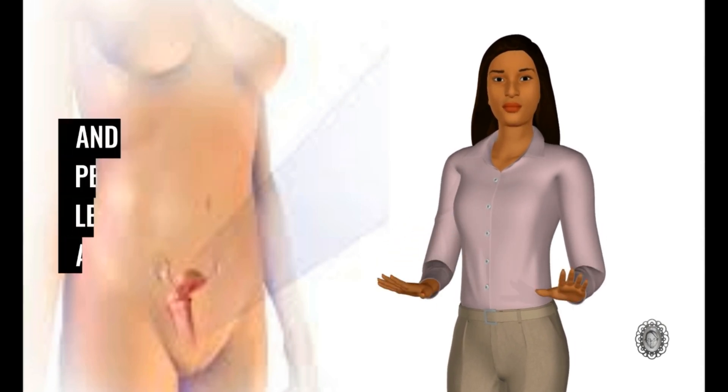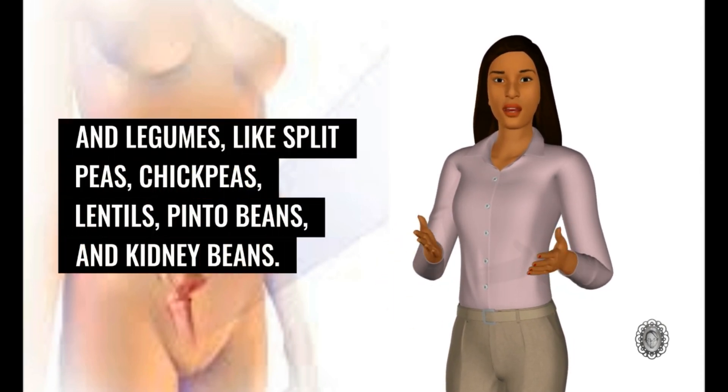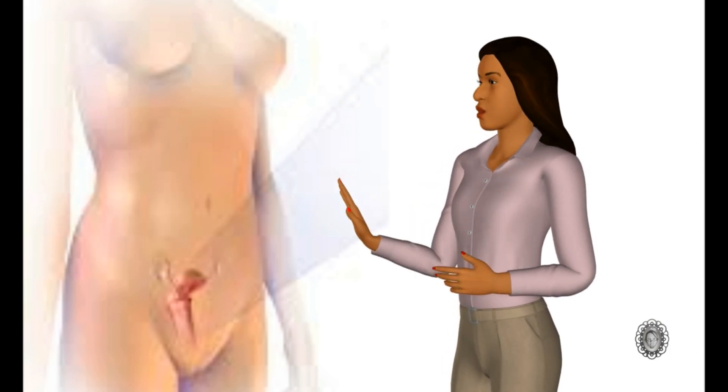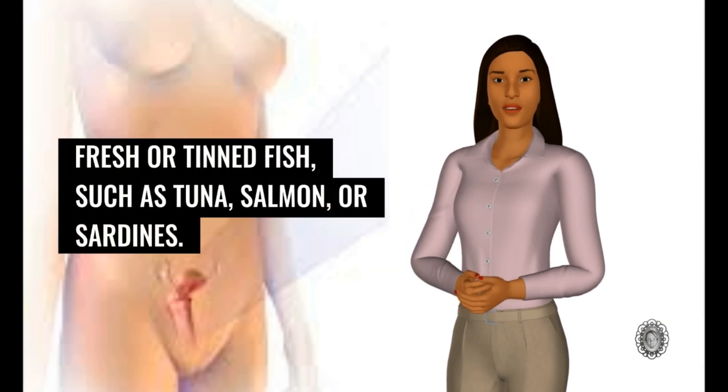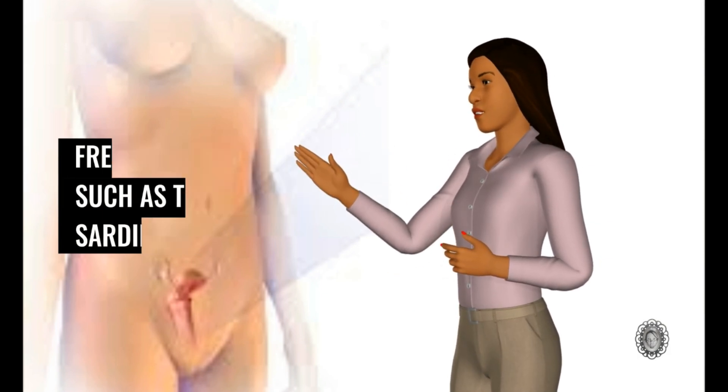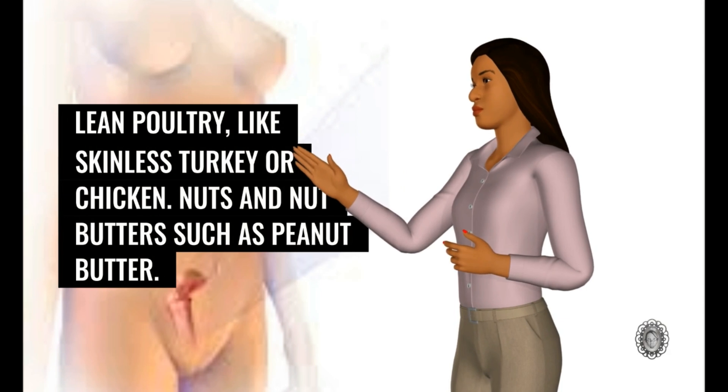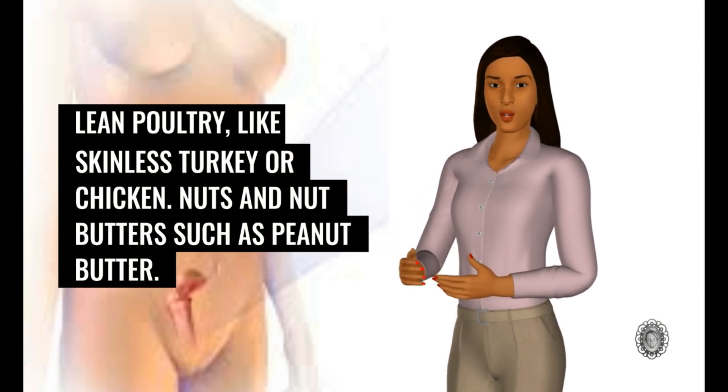There are plenty of good alternatives to red or processed meats, such as beans and legumes, like split peas, chickpeas, lentils, pinto beans, and kidney beans. Fresh or tinned fish, such as tuna, salmon, or sardines. Lean poultry, like skinless turkey or chicken. Nuts and nut butters such as peanut butter.